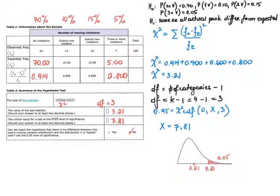We go through the same process for the last cell. 7 observed minus 5 expected gives 2; 2 squared is 4; 4 divided by expected frequency 5 gives 0.800, rounded to three decimal places. When you add all four categories in the observed row, you should get 100, because the sample size is 100. The expected frequencies also add up to 100: 70 + 10 + 15 + 5 = 100.